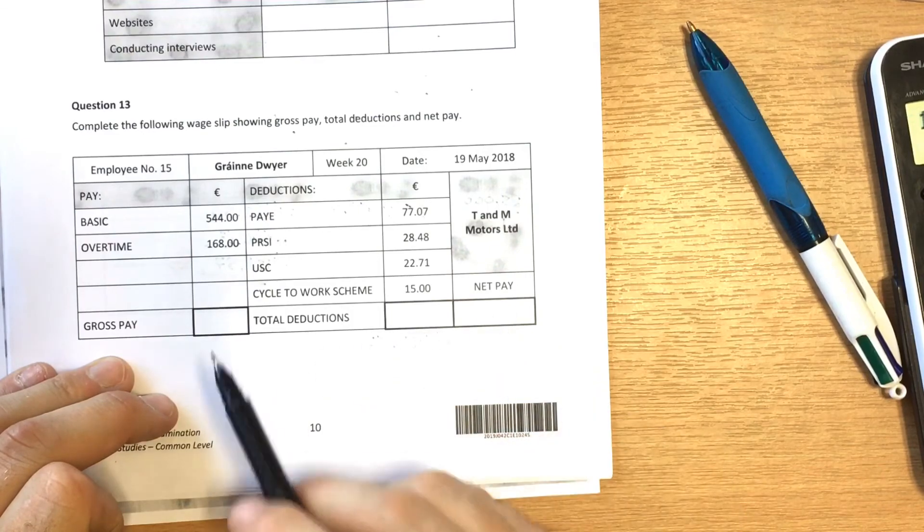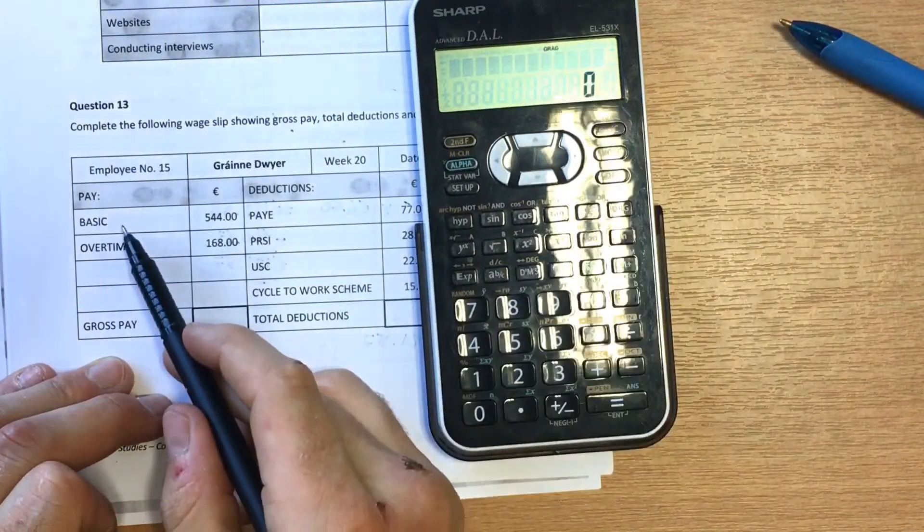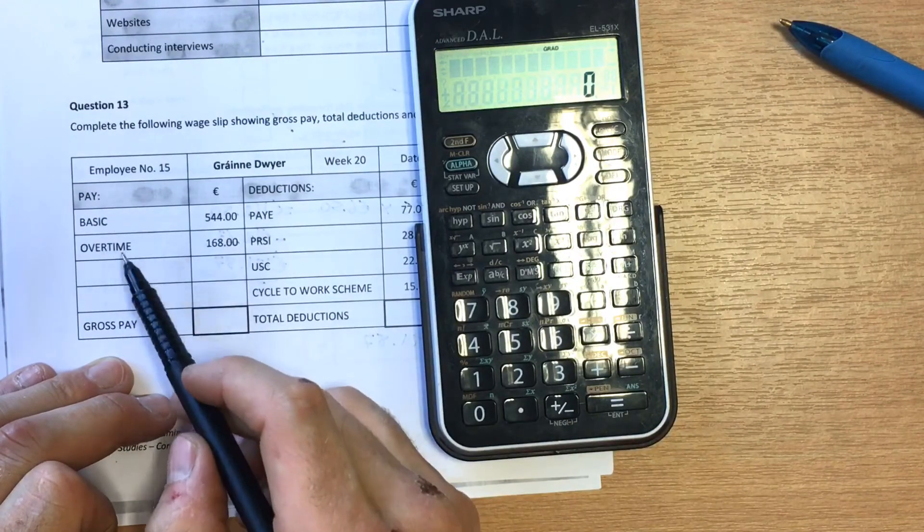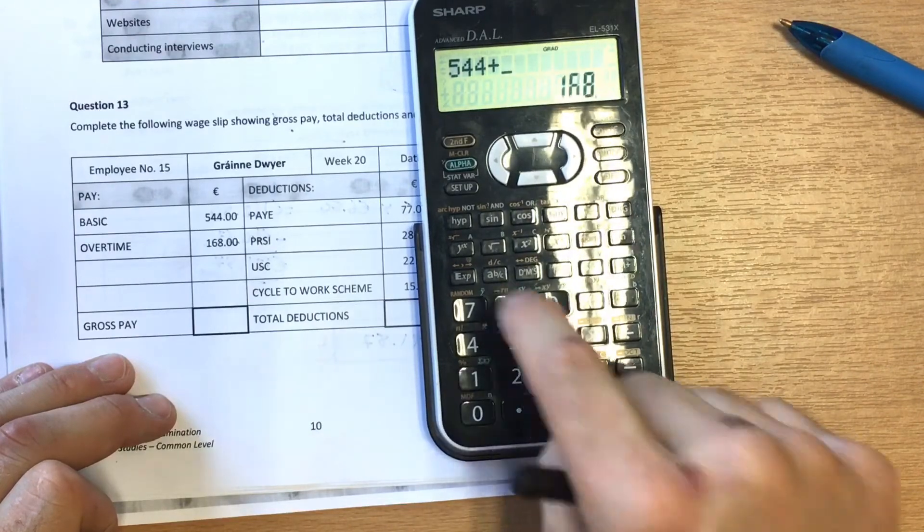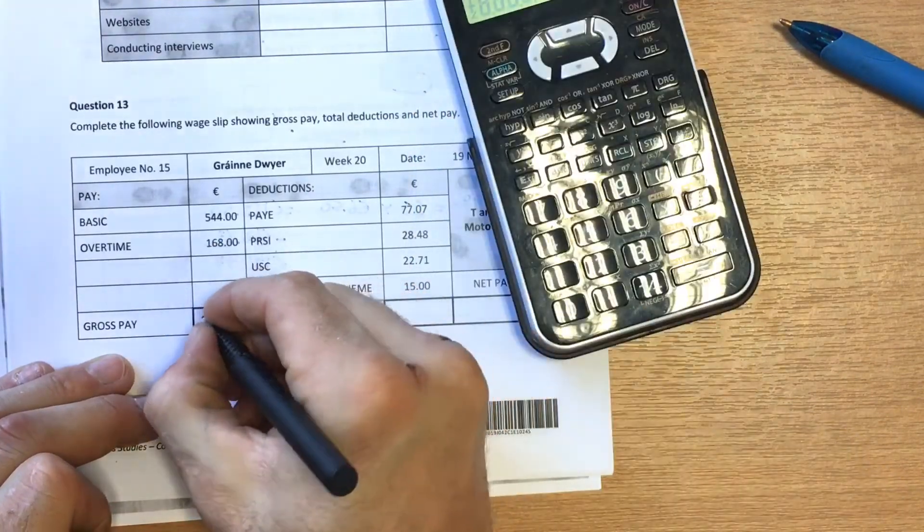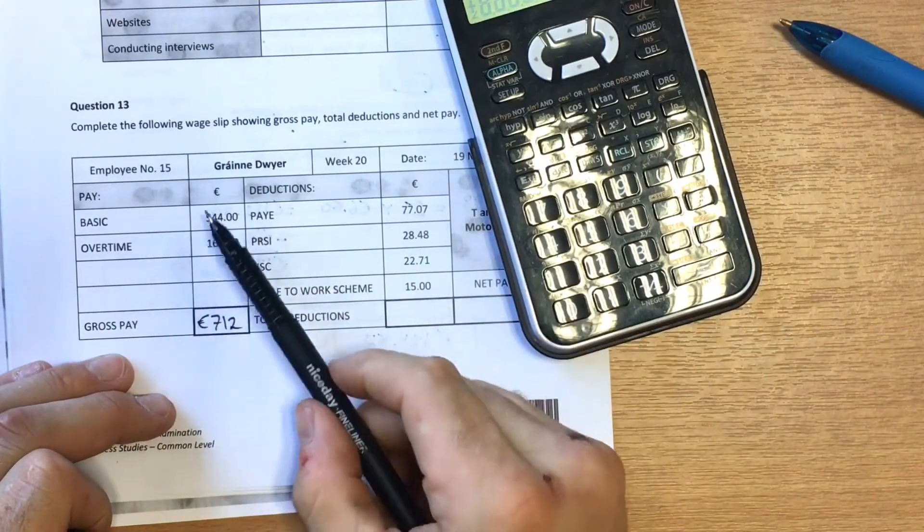The first thing we must do is add up our basic pay plus our overtime to get our gross pay. So it's 544 plus 168 equals 712.